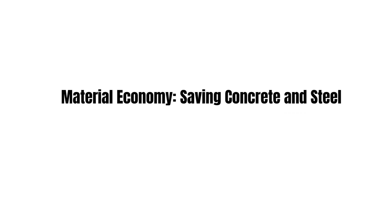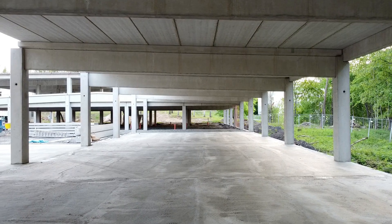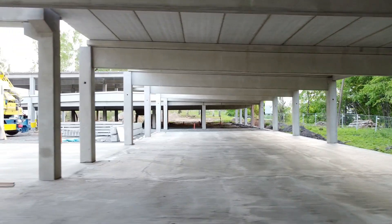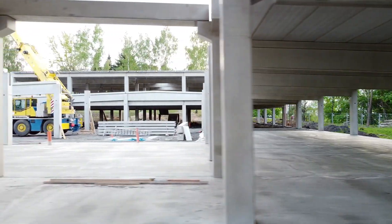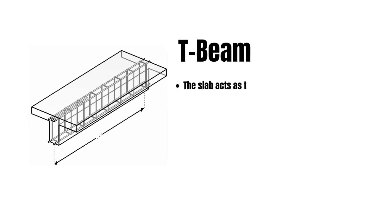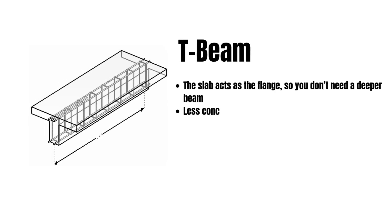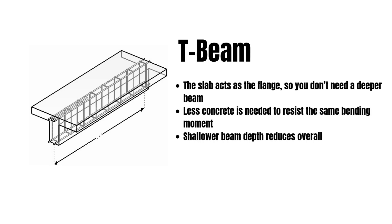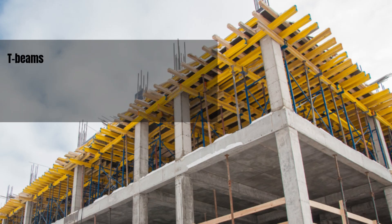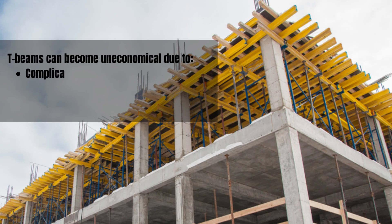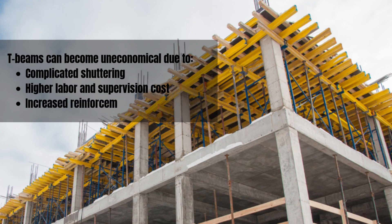Regarding material economy — saving concrete and steel: T-beams are often more economical in large projects, particularly when floor slabs and beams are repetitive. The slab acts as the flange, so you don't need a deeper beam; less concrete is needed to resist the same bending moment; and shallow beam depth reduces overall building height in multi-story buildings. However, in small-scale projects, T-beams can become uneconomical due to complicated shuttering, higher labor and supervision costs, and increased reinforcement detailing time. So the economic advantage depends on project size and complexity.